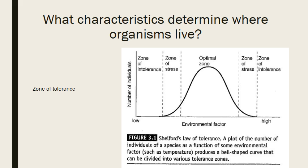When we talk about zone of tolerance, it is the ways in which the environment provides the proper characteristics for an organism to survive and to thrive. The characteristics that play into a zone of tolerance can include, but are not limited to, temperature, pH, salinity, sunlight exposure, nutrient content, and turbidity. The range of characteristics that an organism needs in order to be able to survive and thrive is known as that organism's zone of tolerance.